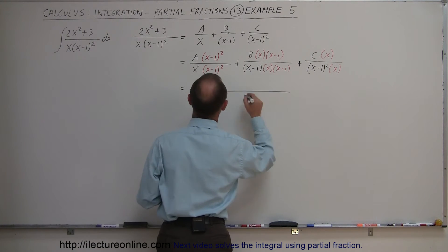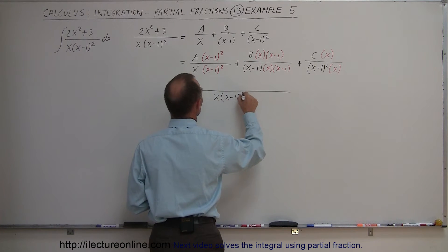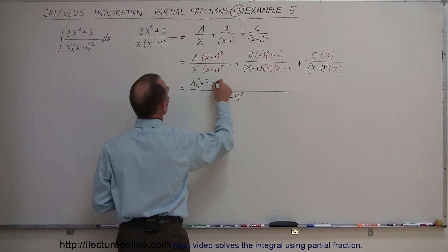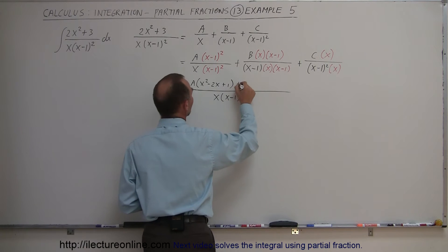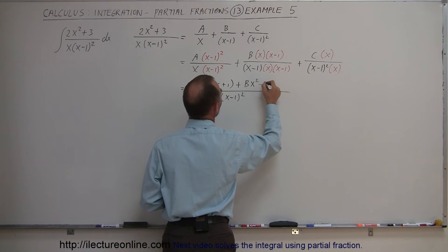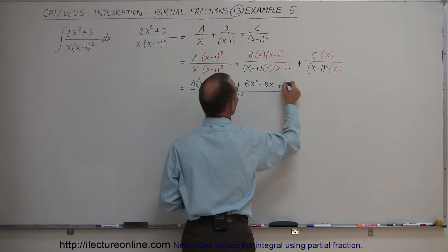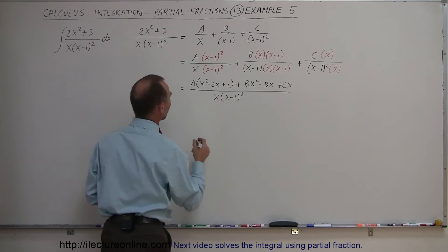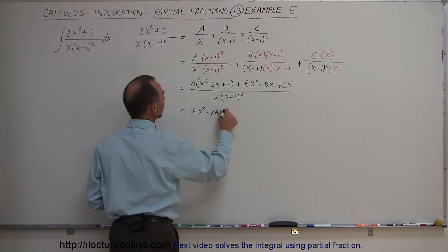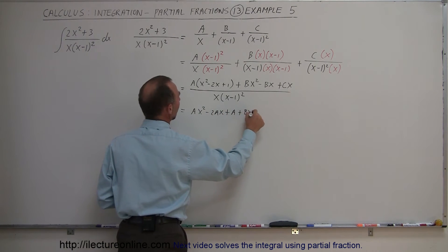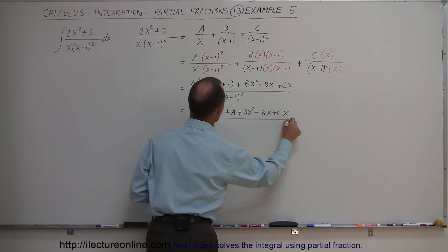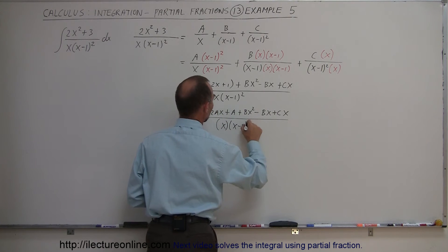So this is equal to everything over x times x minus 1 quantity squared. So in the numerator we have A times x squared minus 2x plus 1. Here we have plus B times x times x is x squared and B times x times minus 1 is minus Bx. And over here we have plus Cx and all we have to do here is multiply this through. So this is equal to Ax squared minus 2Ax plus A plus Bx squared minus Bx plus Cx. And all that divided by the quantity x times x minus 1 squared.